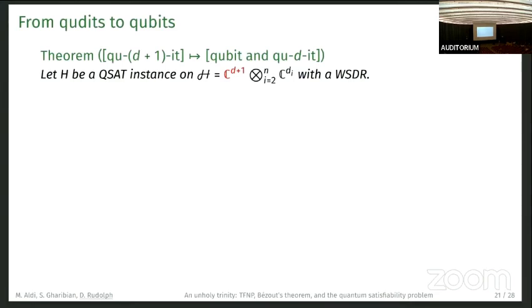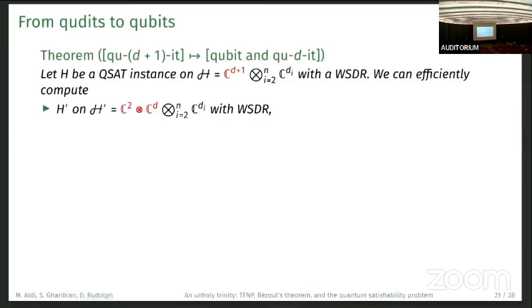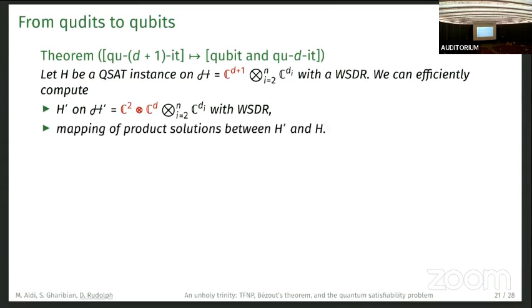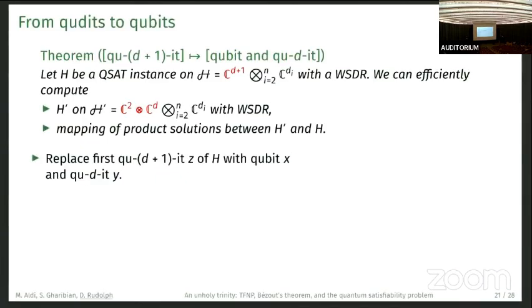The way this reduction is supposed to work is we have this construction here. We take one qudit of dimension d plus one and embed it into a qubit and a qudit. If we have H as a QSAT instance on the Hilbert space with a WSDR, then we can compute an H' on another Hilbert space, so we go from d plus one to two and d. Mapping of product solutions can be efficiently done between H' and H.